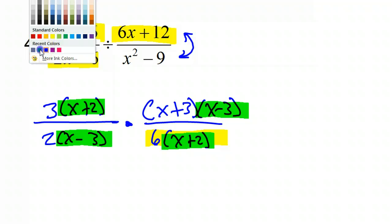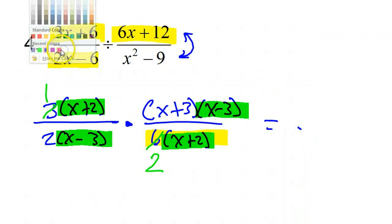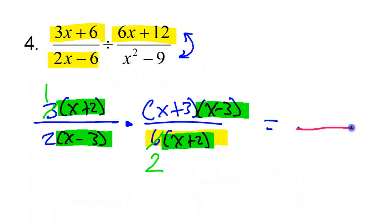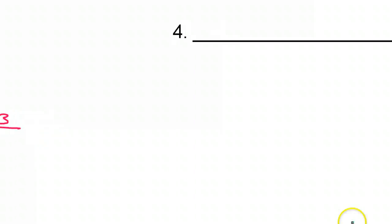Now anything that I highlight now in green is going to cancel out. So the x plus 2 and the x plus 2, they're gone. The x minus 3 and the x minus 3, that's gone. Now while we're at it, let's divide both of these by 3. 3 goes into itself once, 3 goes into 6 twice. So in the denominator, all that's left is 2 times 2. So that's going to be 4 in the denominator. In the numerator, all that's left is x plus 3. So x plus 3 over 4, that's what we're dealing with.